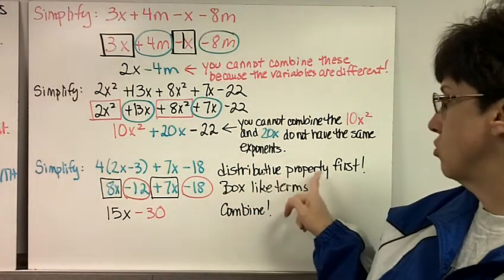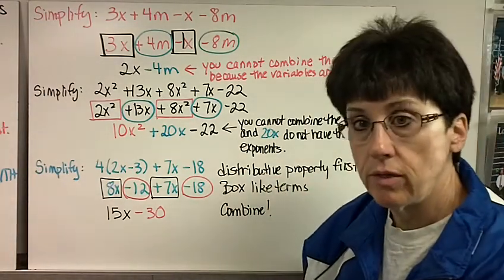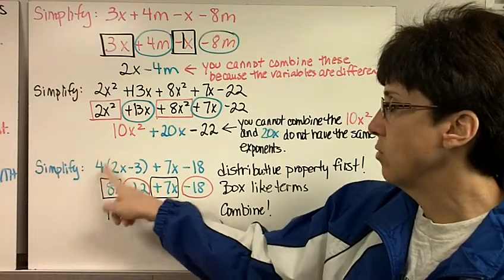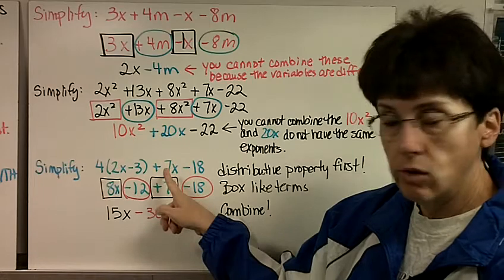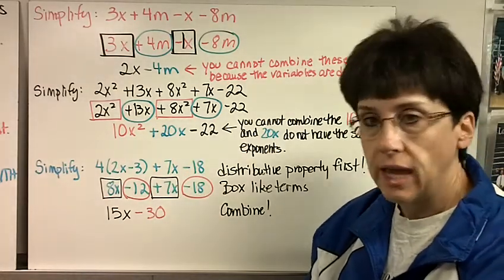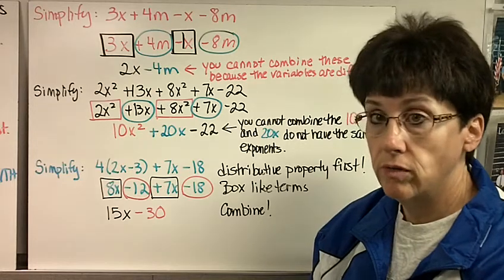So first, I need to use the distributive property to clear out the parentheses. So I'm going to say 4 times 2x is 8x, 4 times negative 3 is negative 12, and then carry down the plus 7x and the minus 18. I cannot combine like terms until I've gotten rid of all the parentheses.